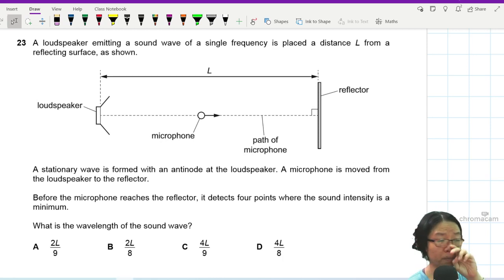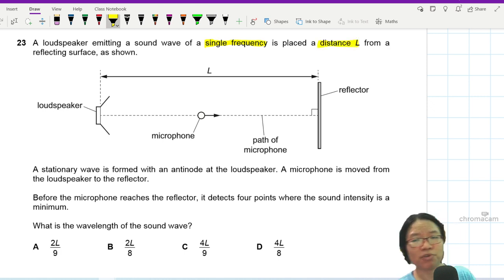Question 23. A loudspeaker emitting a sound wave of a single frequency - so we are keeping the frequency constant for now - is placed at a distance L from a reflecting surface.